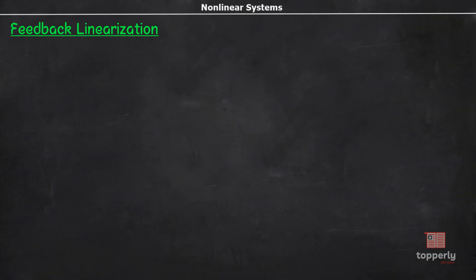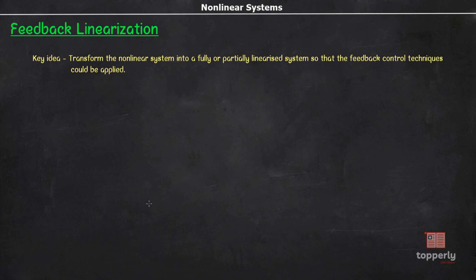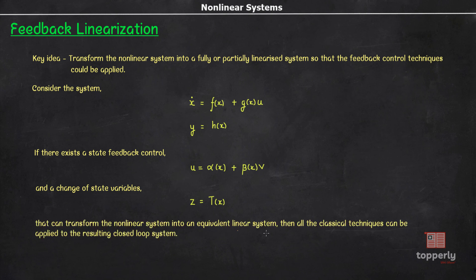Feedback Linearization is a powerful technique for the analysis and design of nonlinear systems. The central idea is to algebraically transform the nonlinear dynamics into a fully or partially linearized system so that feedback control techniques could be applied. If we consider a class of single-input single-output system of the form x-dot = f(x) + g(x)u and y = h(x), if there exists a state feedback control u = α(x) + β(x)v and a change of state variables z = T(x) that can transform a nonlinear system into an equivalent linear system, then all classical techniques can be applied to the resulting closed-loop system.